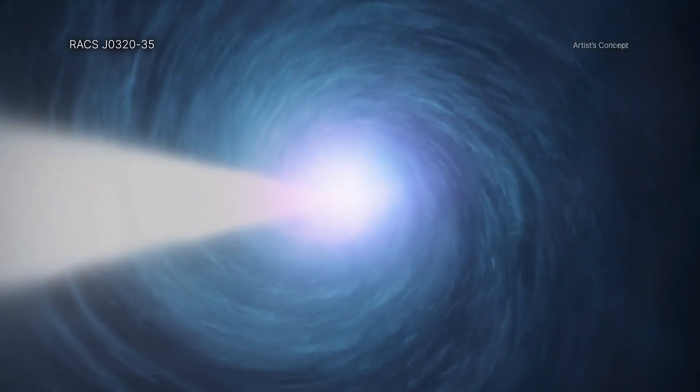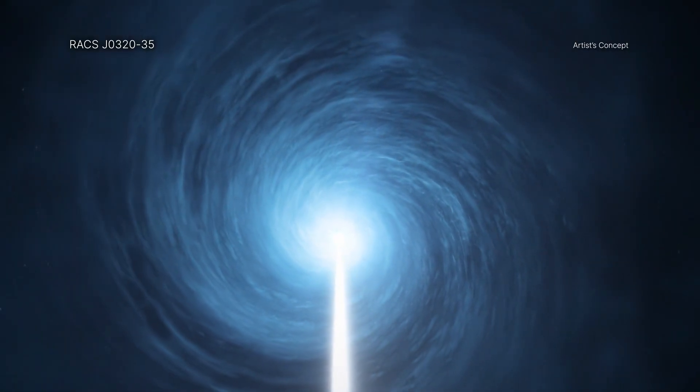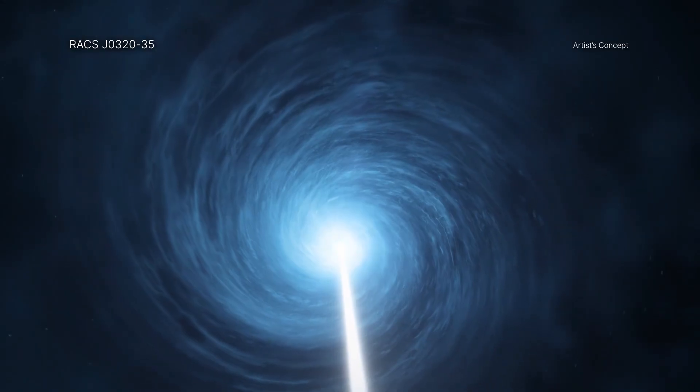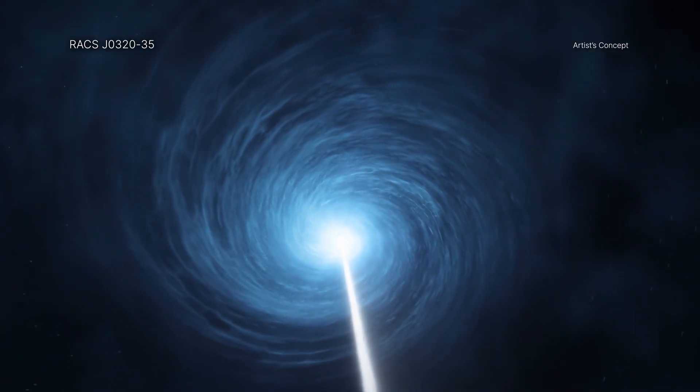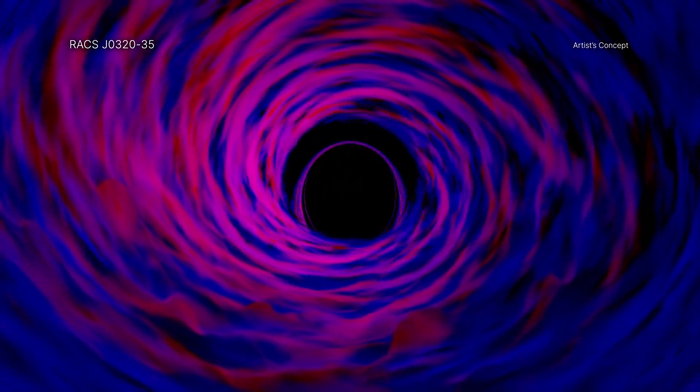The black hole is powering what scientists call a quasar, an extremely bright object that outshines entire galaxies. The power source of this glowing monster is large amounts of matter funneling around and entering the black hole.